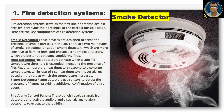The fire detection system serves as the first line of defense against fires by identifying their presence at the earliest possible stage. Key components include smoke detectors, heat detectors, flame detectors and fire alarm control panels. Smoke detectors sense the presence of smoke particles in the air. There are two main types: ionization smoke detectors, which are more sensitive to flaming fires, and photoelectric smoke detectors, which are better at detecting smoldering fires.